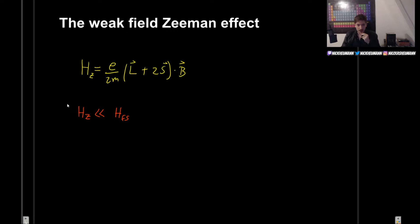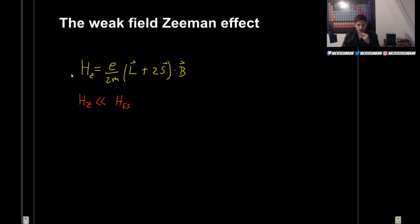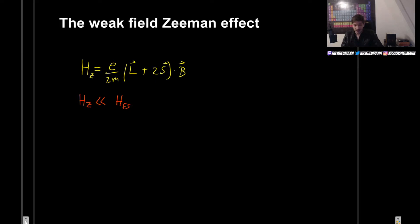How exactly will we proceed? Well, what we used to do when dealing with perturbation theory is first we need to know: is this degenerate or non-degenerate? Unfortunately for us, the hydrogen atom is highly degenerate, so we have to use degenerate perturbation theory.